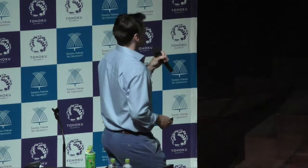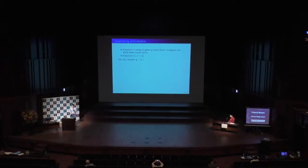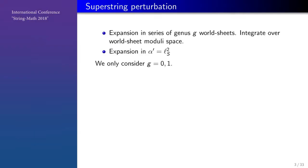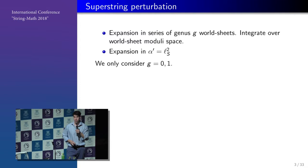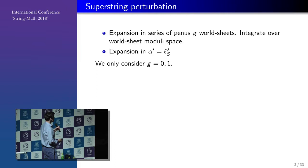First, an overview of what I plan to say. My understanding in superstring perturbation theory is that there are in fact two perturbations. First is an expansion according to the genus — the world sheet will be a surface of genus G with n punctures — and there's a second expansion in a parameter alpha prime. In this talk I will only consider the cases where the genus is 0 or 1, because those are the only cases that I feel I understand.